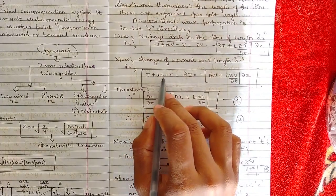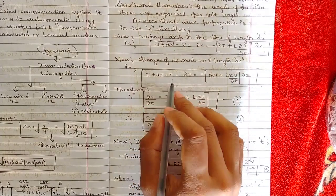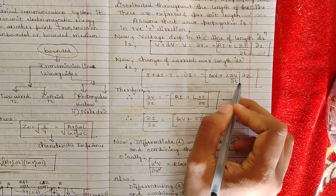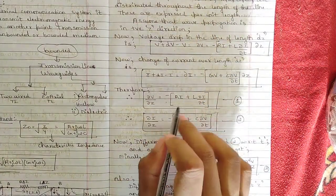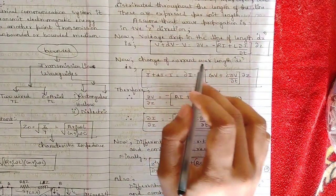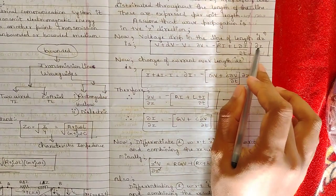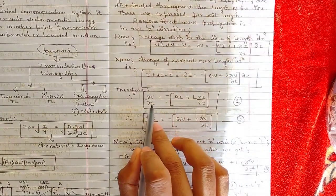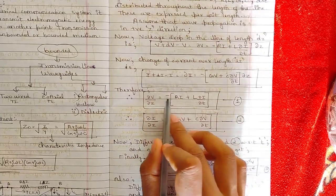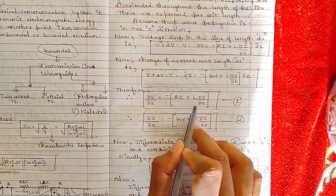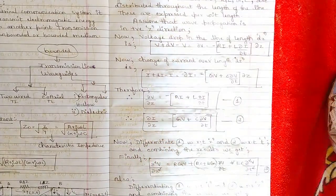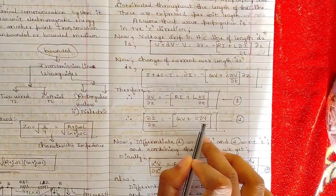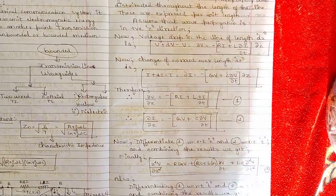The current drop equation is: i plus di minus i equals di, which gives di = minus (G·v + C·∂v/∂t)·dz. Bringing dz to the other side of both equations, we get Equation 1: ∂v/∂z = minus(R·i + L·∂i/∂t), and Equation 2: ∂i/∂z = minus(G·v + C·∂v/∂t).